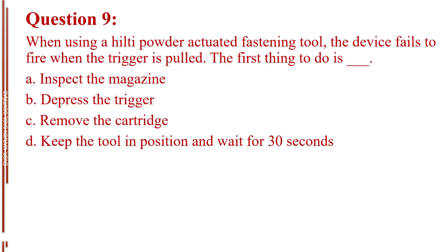Question number 9. When using a Hilti powder actuated fastening tool, the device fails to fire when the trigger is pulled. The first thing to do is blank. Letter A, inspect the magazine. Letter B, depress the trigger. Letter C, remove the cartridge. Letter D, keep the tool in position and wait for 30 seconds. The answer is Letter D, keep the tool in position and wait for 30 seconds.